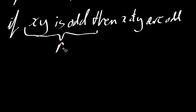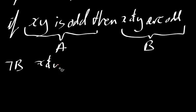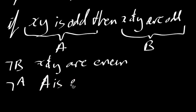So this bit here is A, and x and y are odd is B. So to do a proof by contraposition, we have to start off with not B. In that case, not B is going to be x and y are even. And what we need to do from there is show that not A is true, so that xy is even.